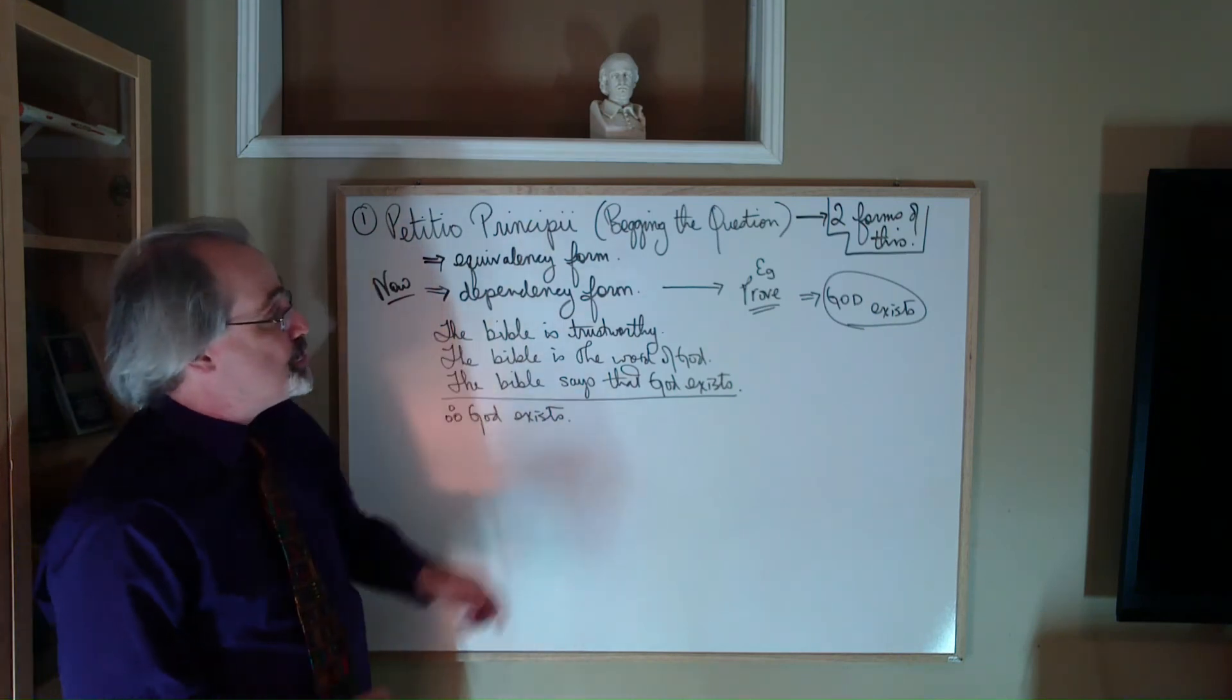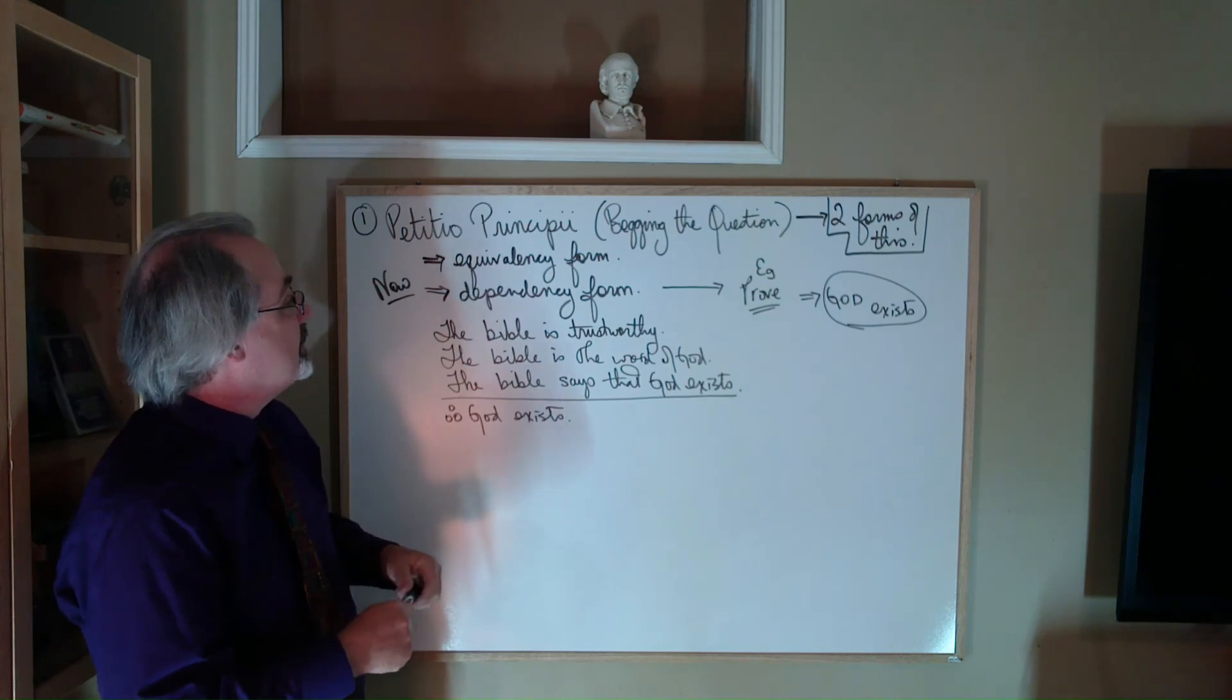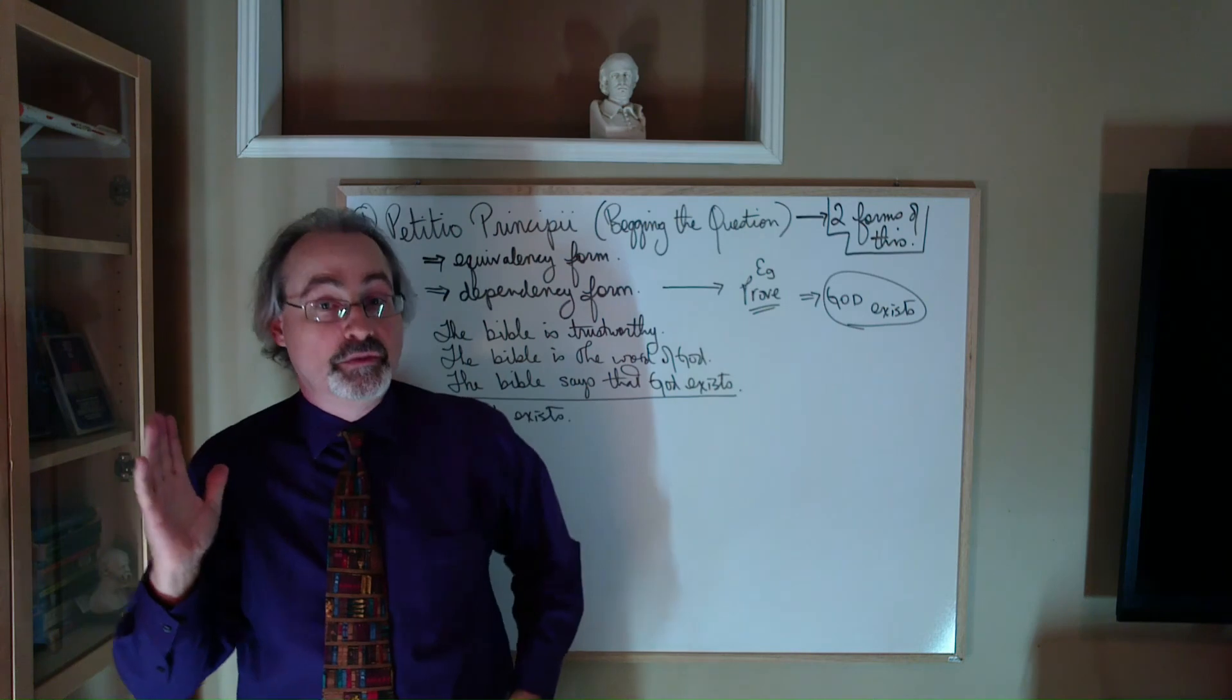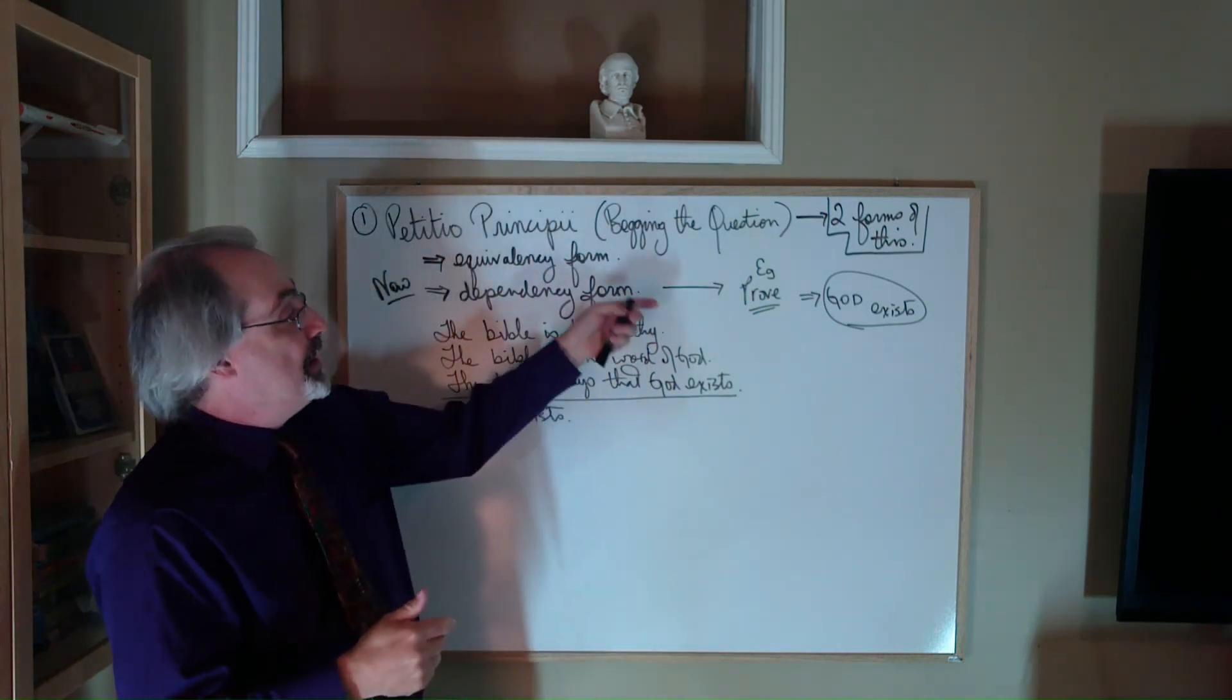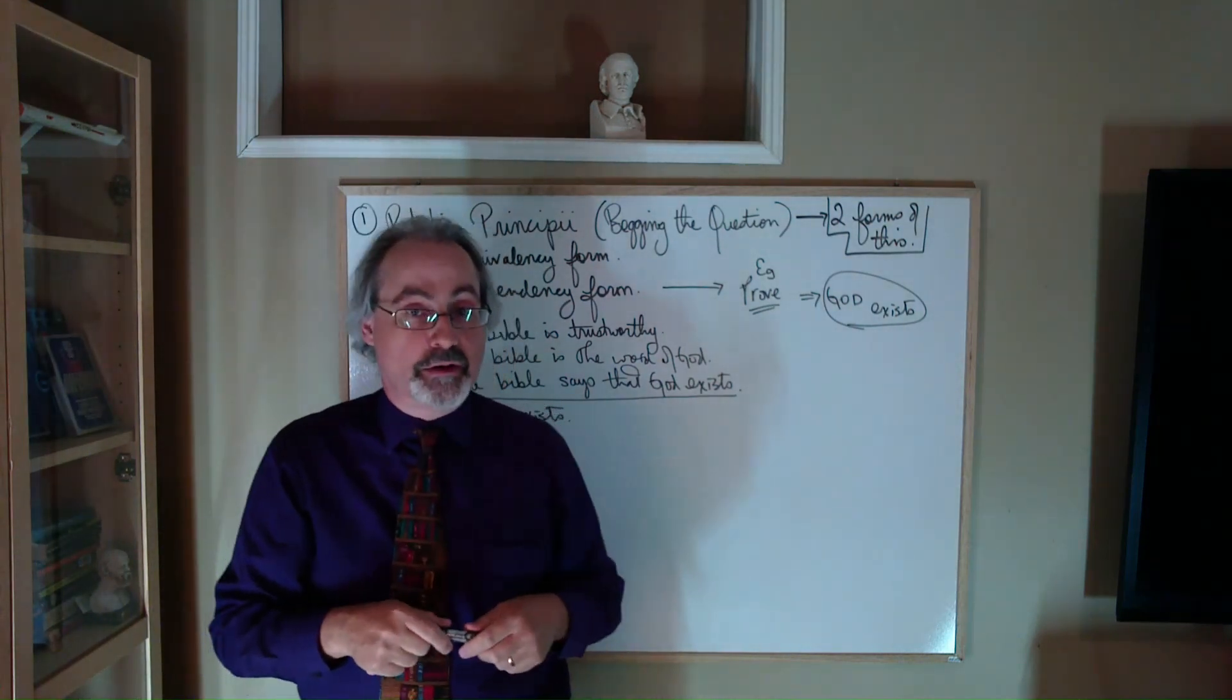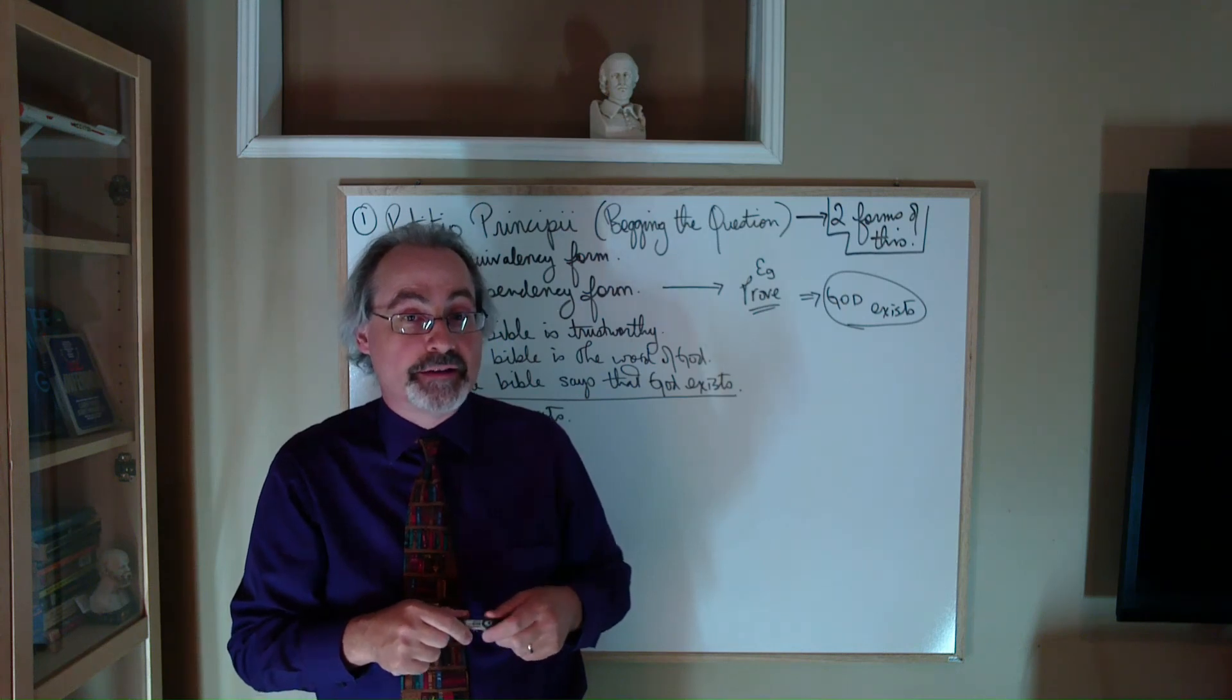All right. So, there's your two forms, the equivalency and the dependency form of begging the question. Remember, it's not demanding the question. It's looking at if you've been proving or just restating what you're supposed to prove at the end of the argument. Now, let's look at the next form of the fallacy.